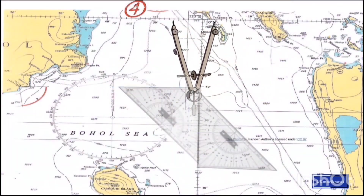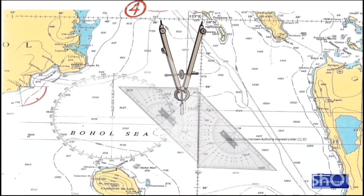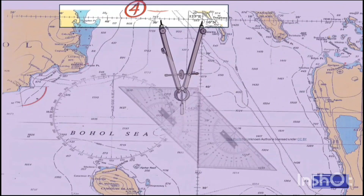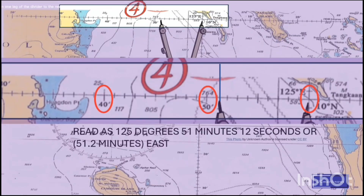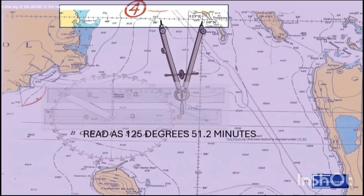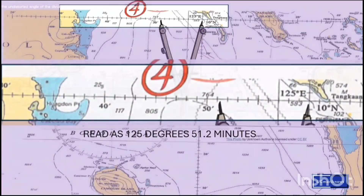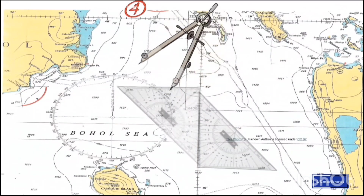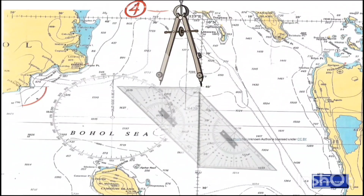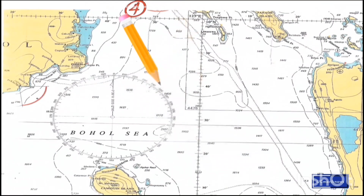After locating our latitude, do not move any of the triangles. Now let's use our compass divider and locate our longitude. As you notice, the numbers are increasing going east. These minutes are still part of 124 degrees, with one minute each line. Position one leg of the divider to the nearest reference meridian of longitude and the other leg to the position of longitude. Now move the undistorted angle of the divider, with one leg pointed to the meridian of longitude where it intersects the triangle. The other leg that intersects the triangle is our position in the chart.